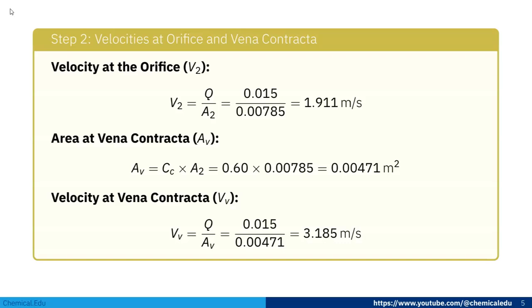Now velocity at orifice V₂: since Q is given, we can easily calculate using continuity equation Q = A₁V₁ = A₂V₂. We know A₁ and A₂, so we can calculate V₁ and V₂. V₂ = Q/A₂ = 0.015/0.00785 = 1.911 m/s.